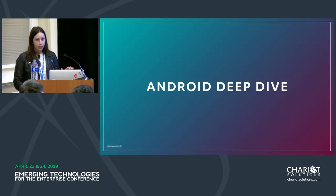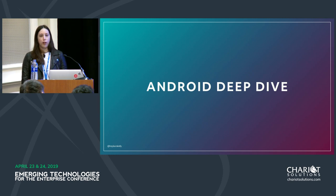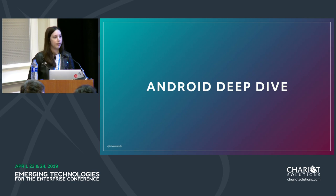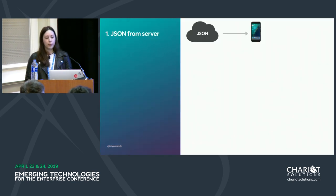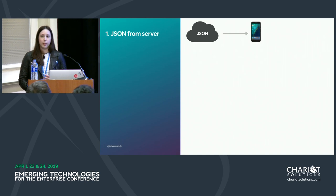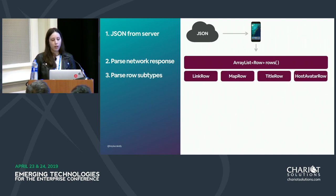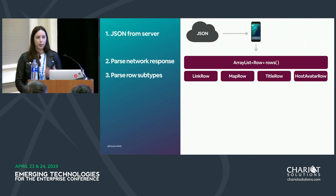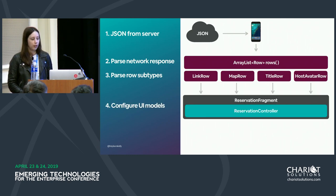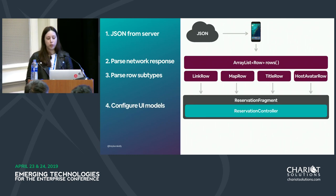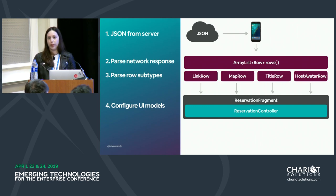That's the high level of how our system works on all different devices. Let's go into the Android code to see exactly how that response is parsed. On Android, the first step is that a JSON blob is sent to the Android device, then we parse that network response into an array of rows. The rows are parsed into their respective subtypes, then passed to the fragment and UI controller — the code that renders the screen on Android.